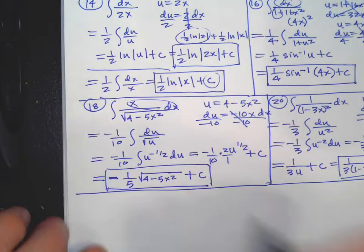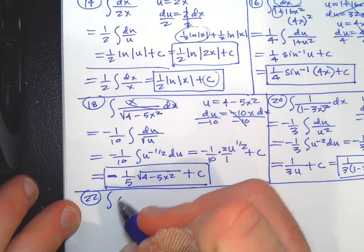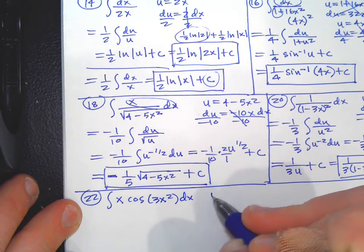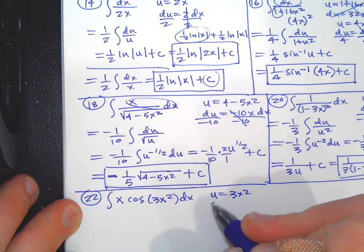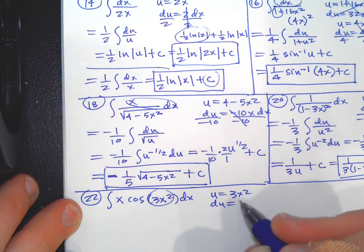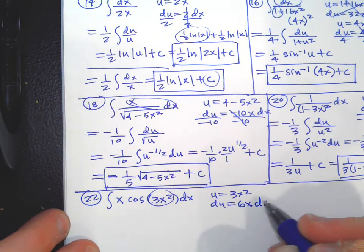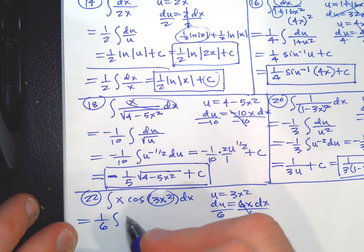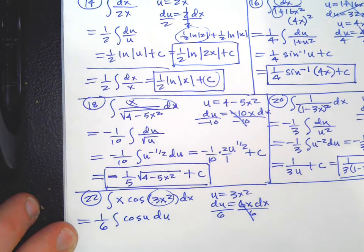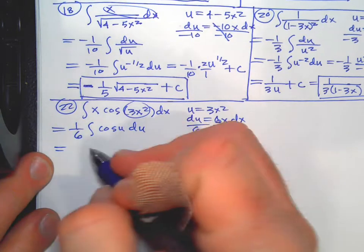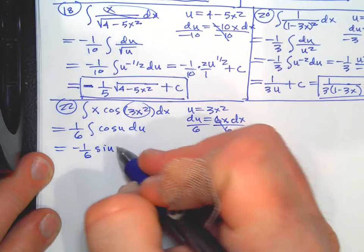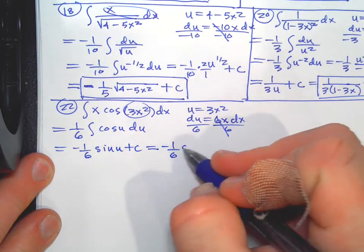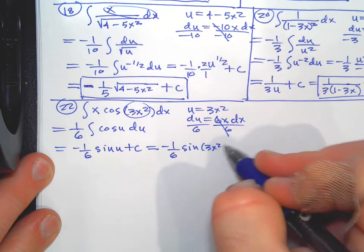Problem 22 is the integral of x·cos(3x²) dx. Let u equal 3x², du equals 6x dx — don't want the six. So it becomes one-sixth times the integral of cos(u) du, which gives one-sixth sin(u) plus C. Writing back in terms of the original variable: one-sixth sin(3x²) plus C.